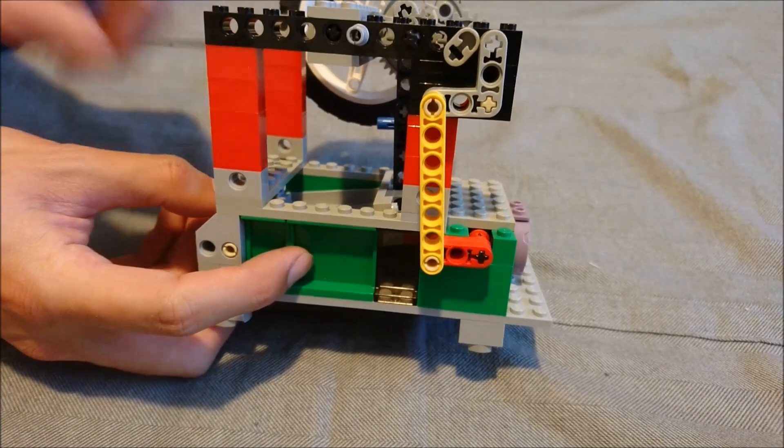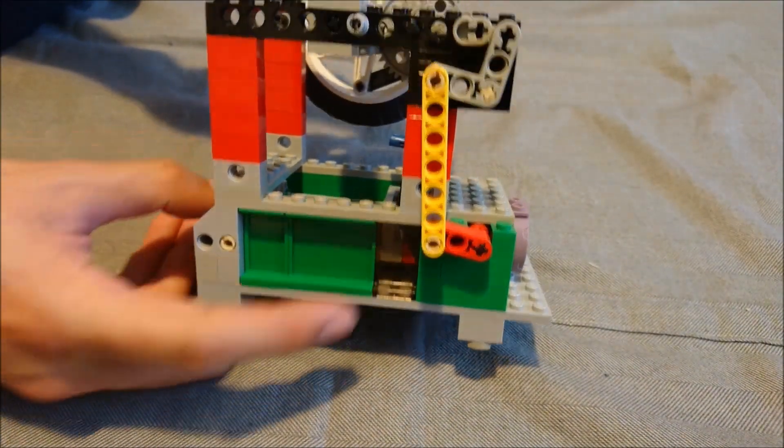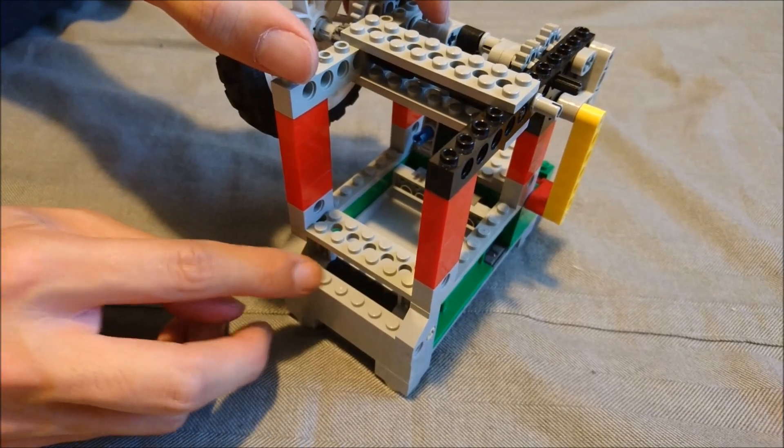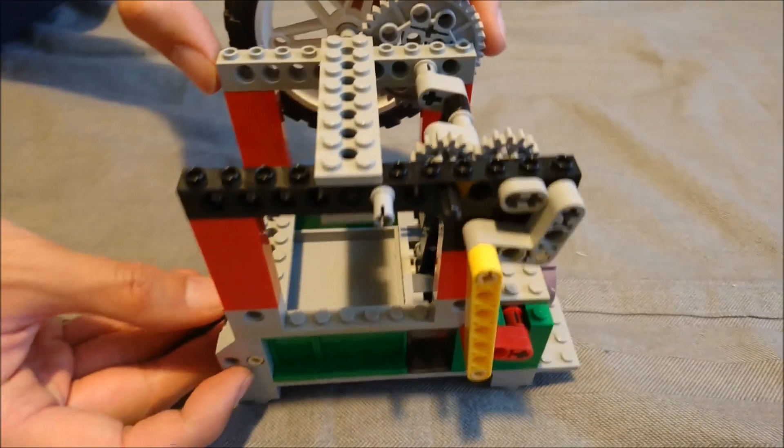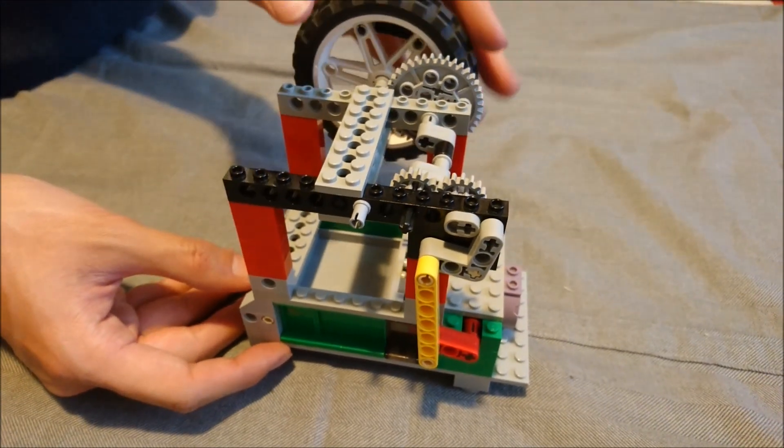So the sides are sealed here, the end is sealed by those cheese slopes, and this side's hinge is pretty much blocked off just by having a bunch of axle and pin joiners. So that's how that works.